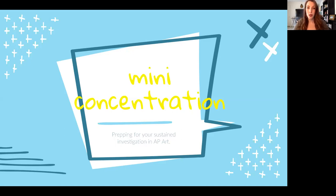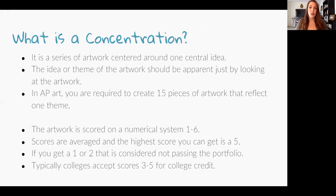We call it a concentration, but the official term in AP art is called sustained investigation, and I'll interchange those terms throughout this presentation. It is a series of artwork centered around one central idea, and that idea or theme should be obvious just by looking at the art. You will be required to make 15 pieces next year around one theme. Artwork is scored on a one-to-six scale, scores are averaged, and the highest score you can get is a five. A one or two is usually considered failing, and most colleges give credit for a three, four, or five.